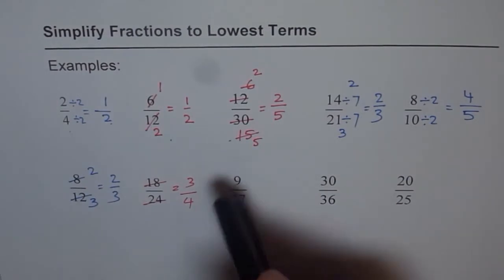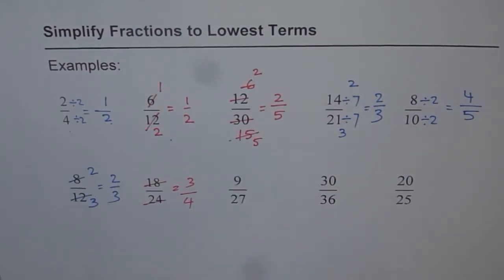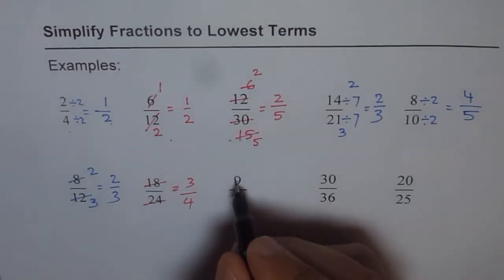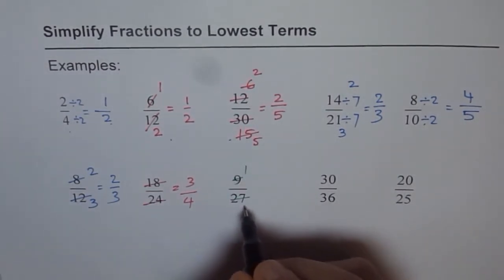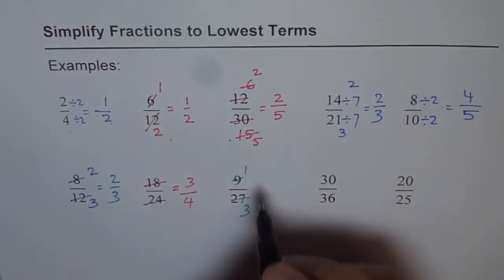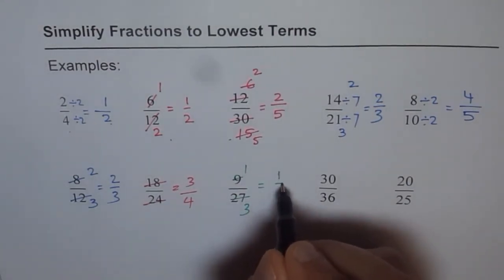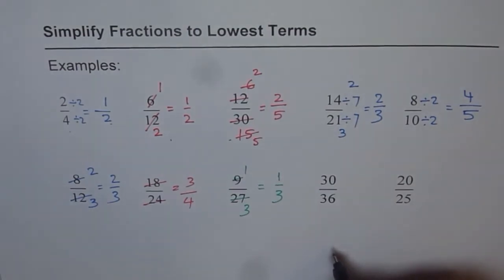How about 9 over 27? 9 is 3 times. 9 times 3 is 27. So we'll divide by 9. So we get 9 divided by 9 is 1. 27 divided by 9 is 3. So my answer is 1 over 3.